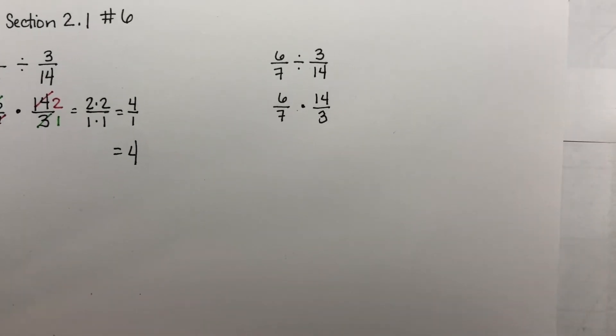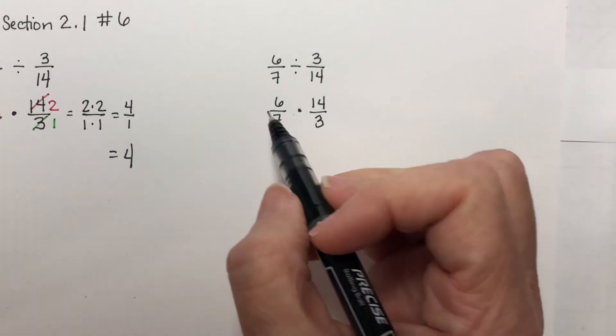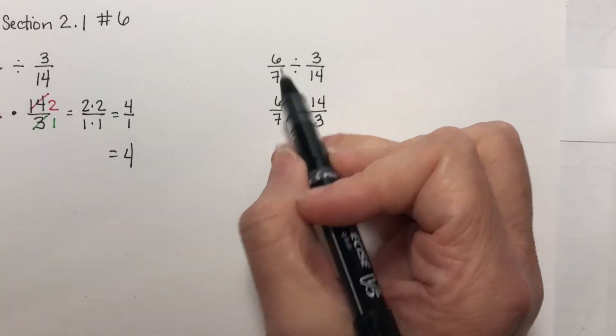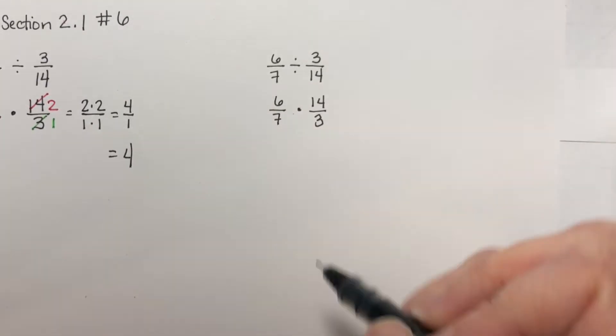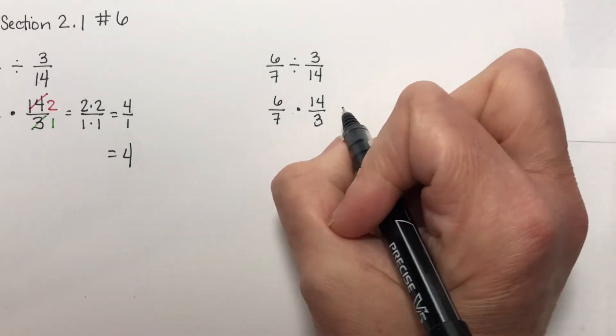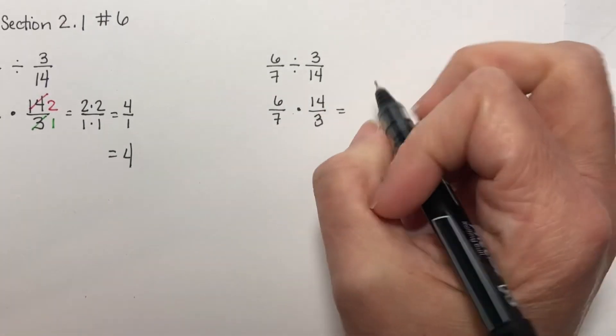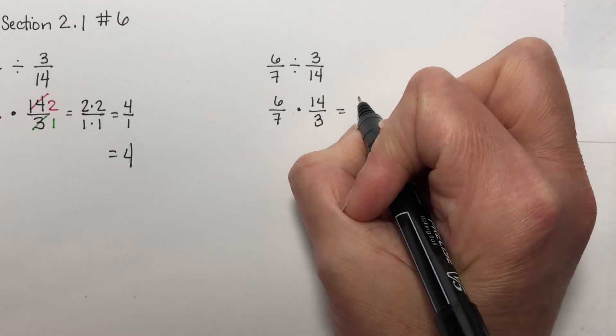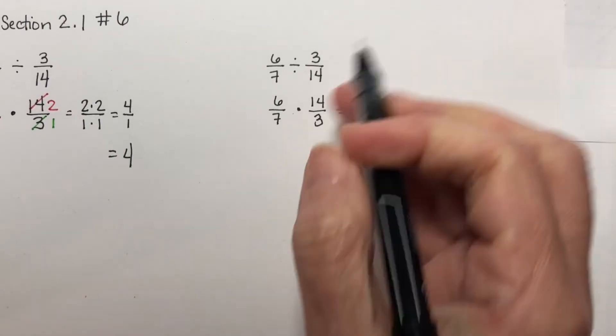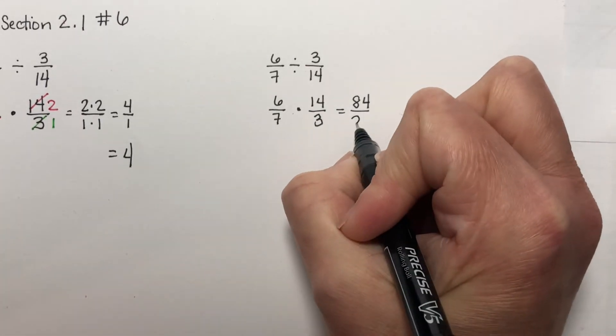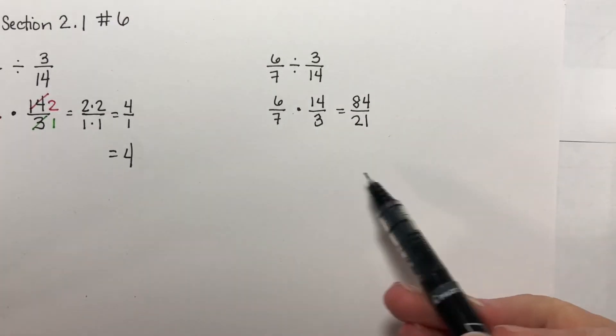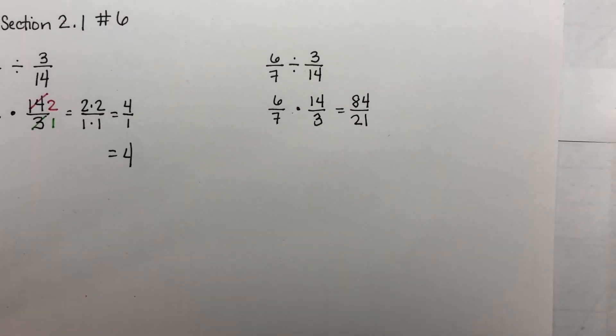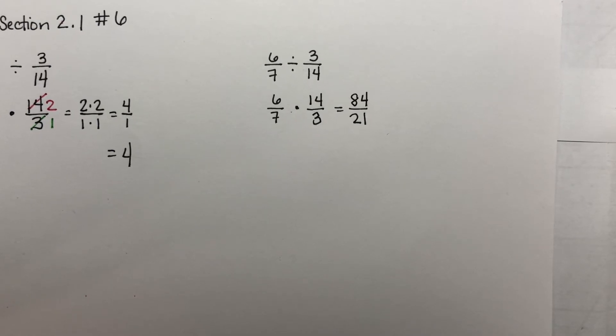Now, how did they do it here? They changed it from division into multiplication by changing it to multiplication and flipping the second one. And then they multiplied straight across. 6 times 14 is 84. 7 times 3 is 21. Now, if you went to your calculator and you just did the division, you would get 4. But let's say you didn't recognize that or you didn't do that, and I'm thinking it's just a fraction that I want to reduce.